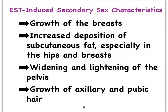When estrogen levels begin to rise around puberty, it leads to what we refer to as secondary sex characteristics. We looked at these in the male; in the female, of course, this leads to the development of breasts, enlargement of the external genitalia, an increased deposition of fat underneath the skin — particularly in the breast and hip area — and the hips begin to widen. Just like in the male, we also start to see the growth of hair in the pubic area and in the armpits.